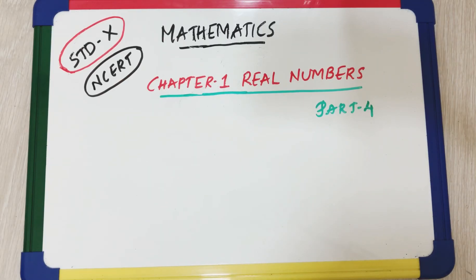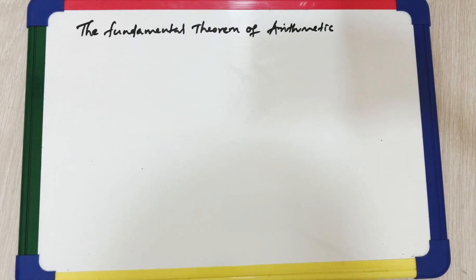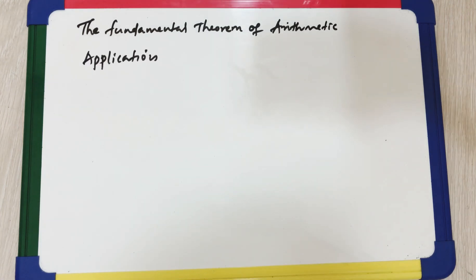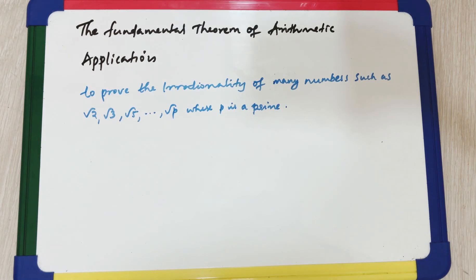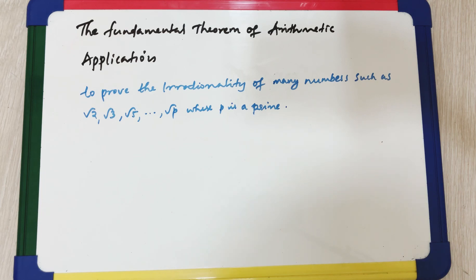Welcome back to my channel. This is my fourth video of Chapter 1 Real Numbers, Mathematics Standard 10, NCERT textbook. In previous videos we discussed the fundamental theorem of arithmetic, and in this video we discuss one of the main applications of the fundamental theorem of arithmetic — to prove the irrationality of many numbers such as √2, √3, √5, and √p where p is a prime.